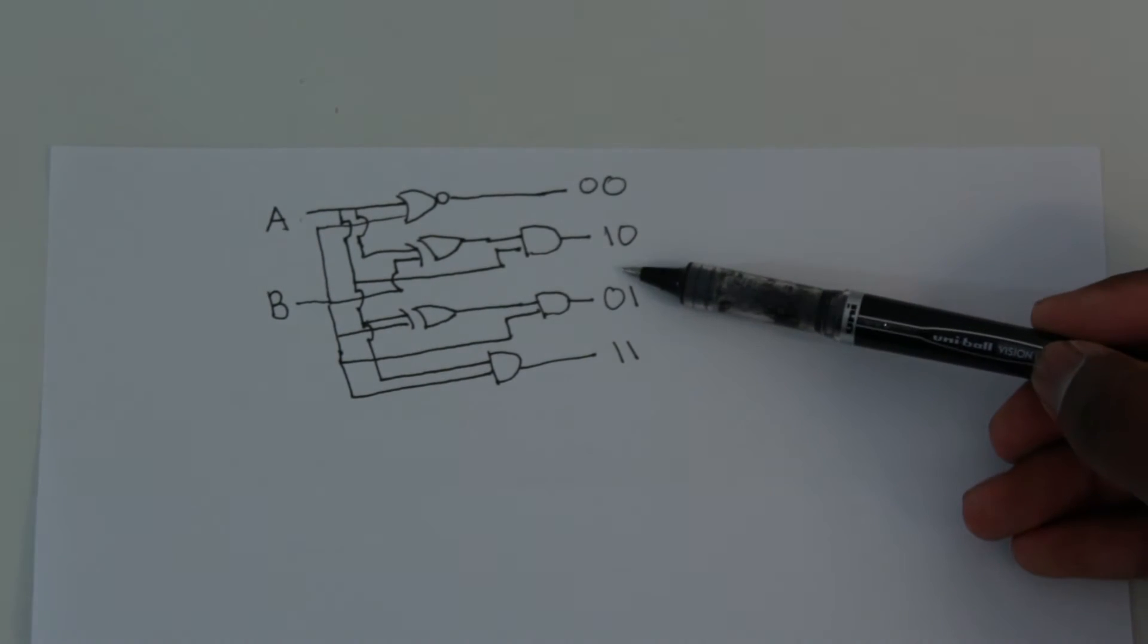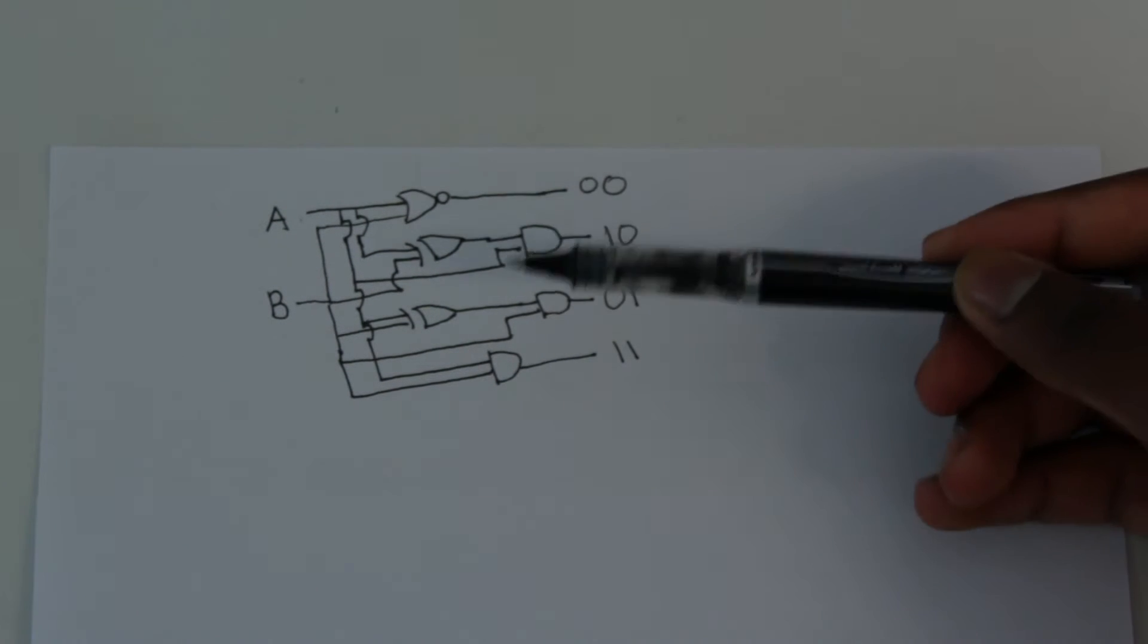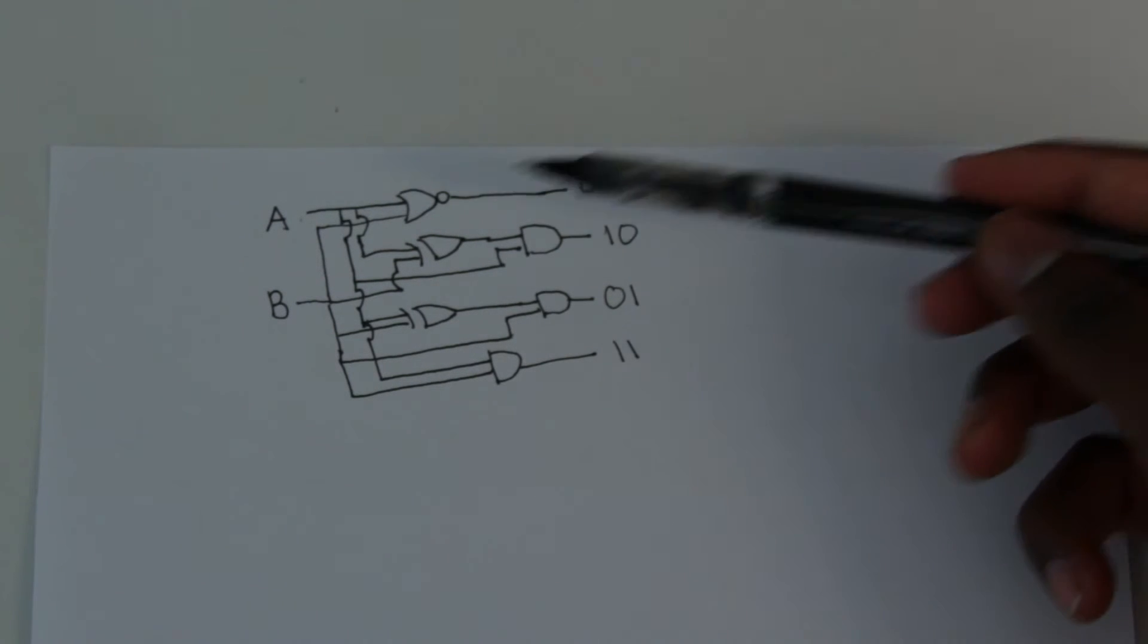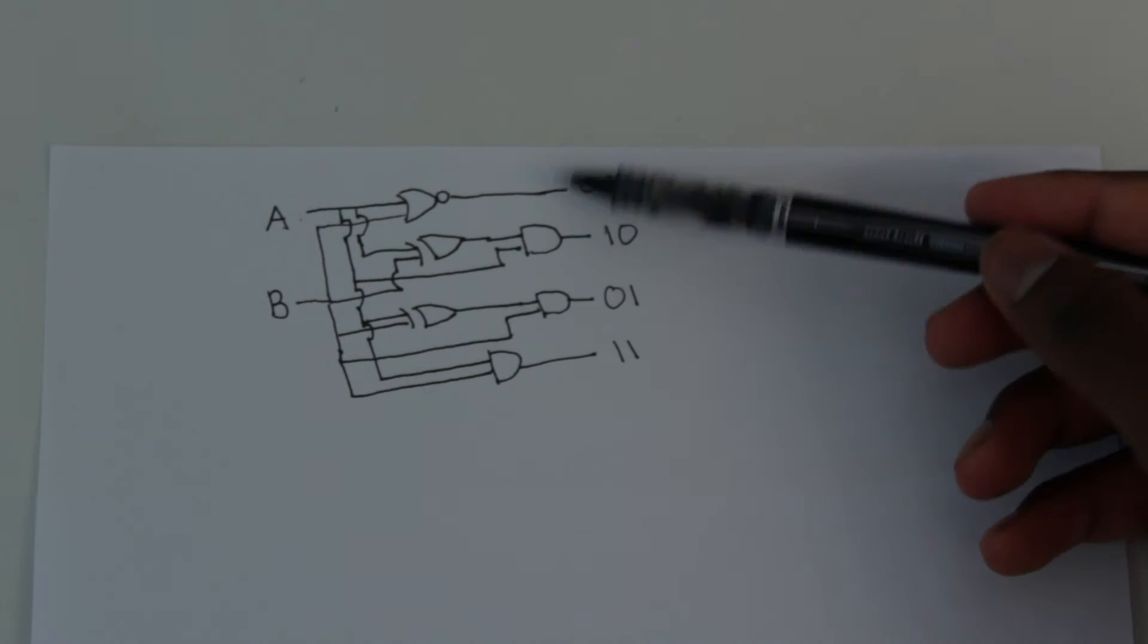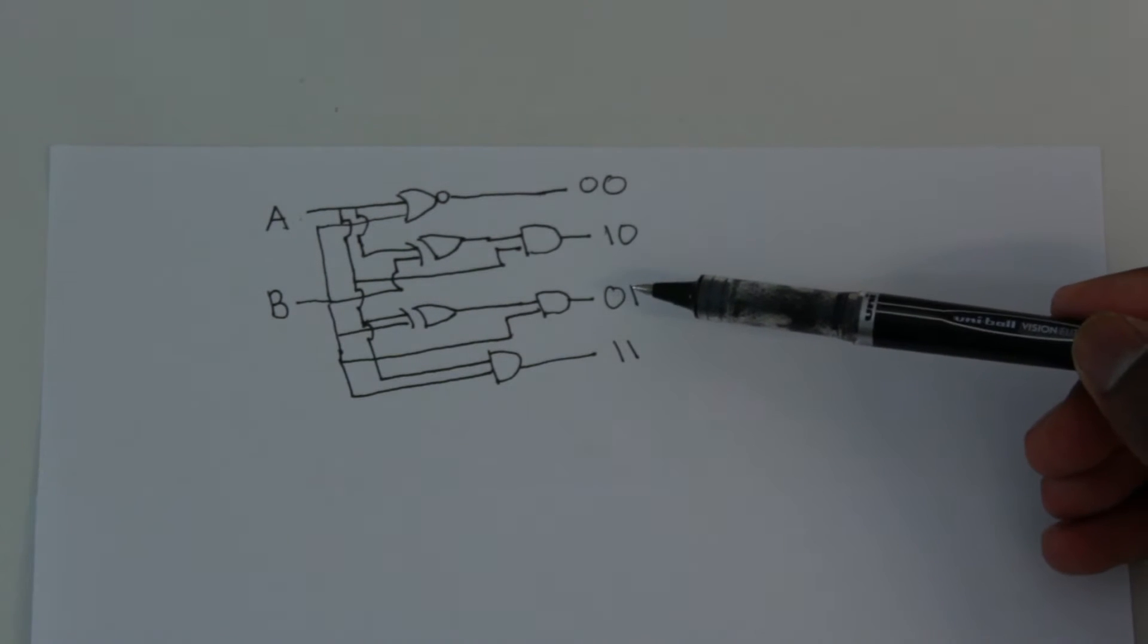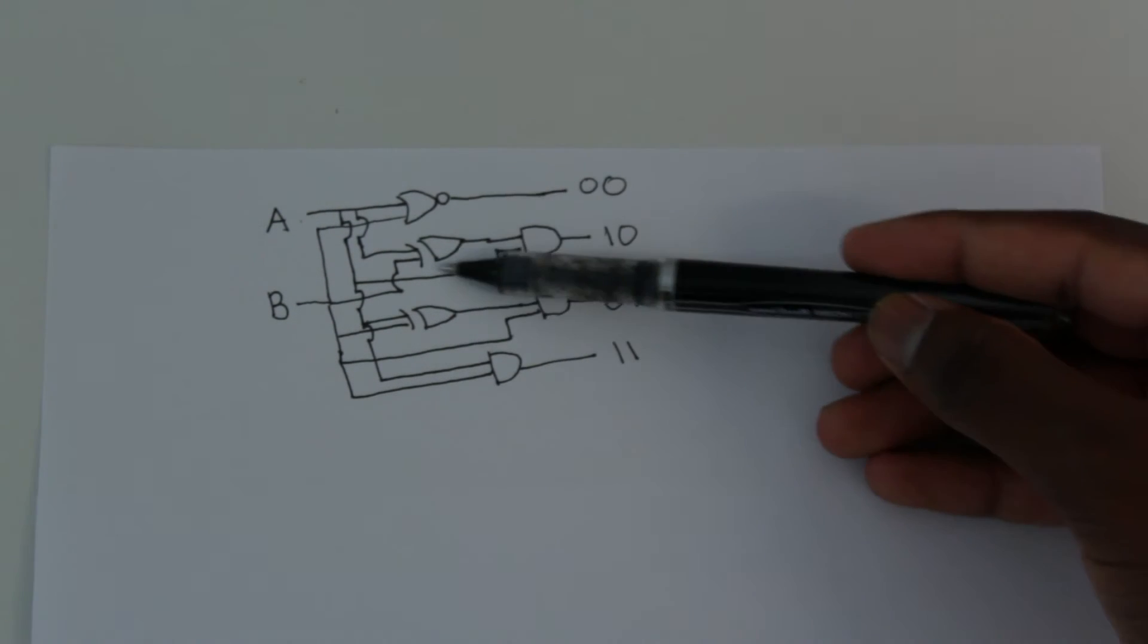Now, how about one for 1, 0? Well, for 1, 0, we could do an XOR gate, because an XOR gate is high when only one of the inputs is high. And that means if the input's 0, 0, then it'll be low. Or if the input's 1, 1, then it'll be low also. So now we know that only one of these inputs is high if this XOR gate is true.